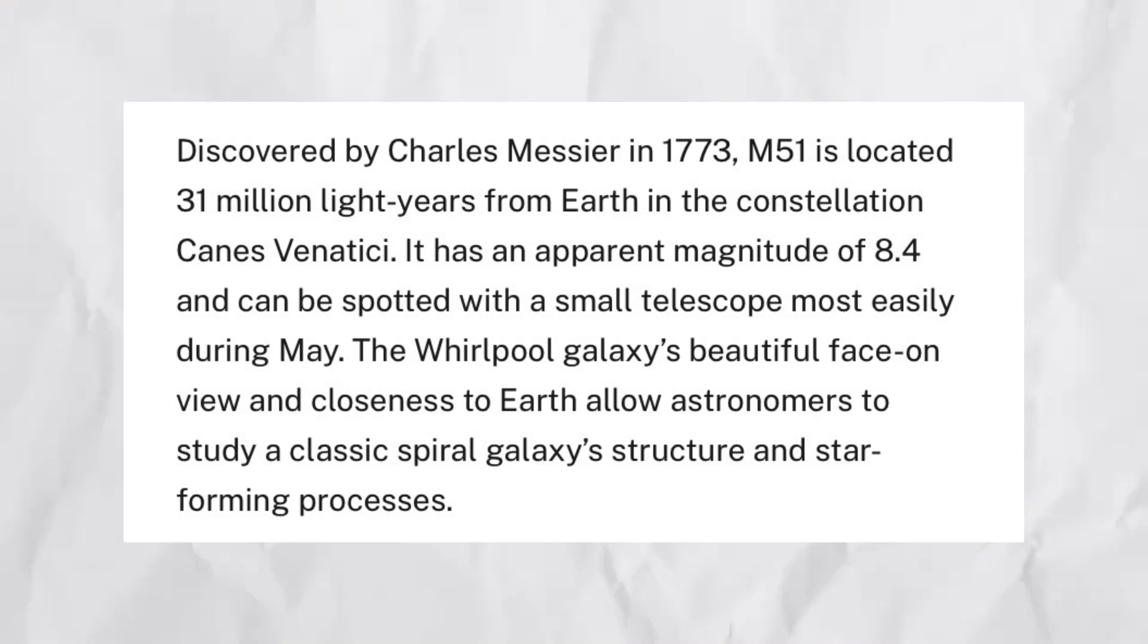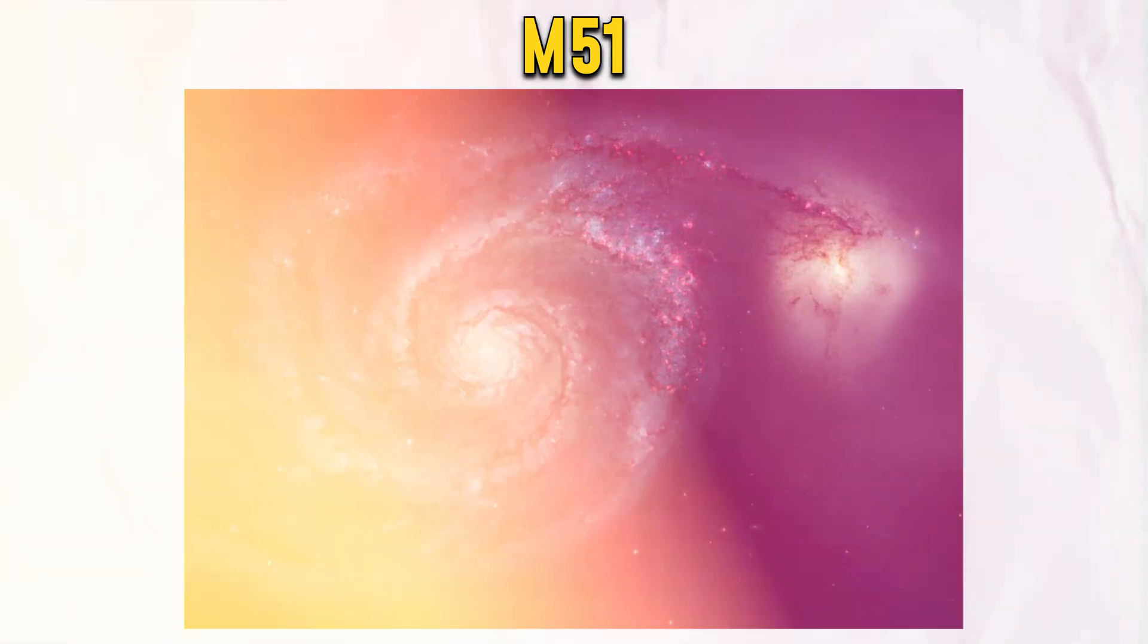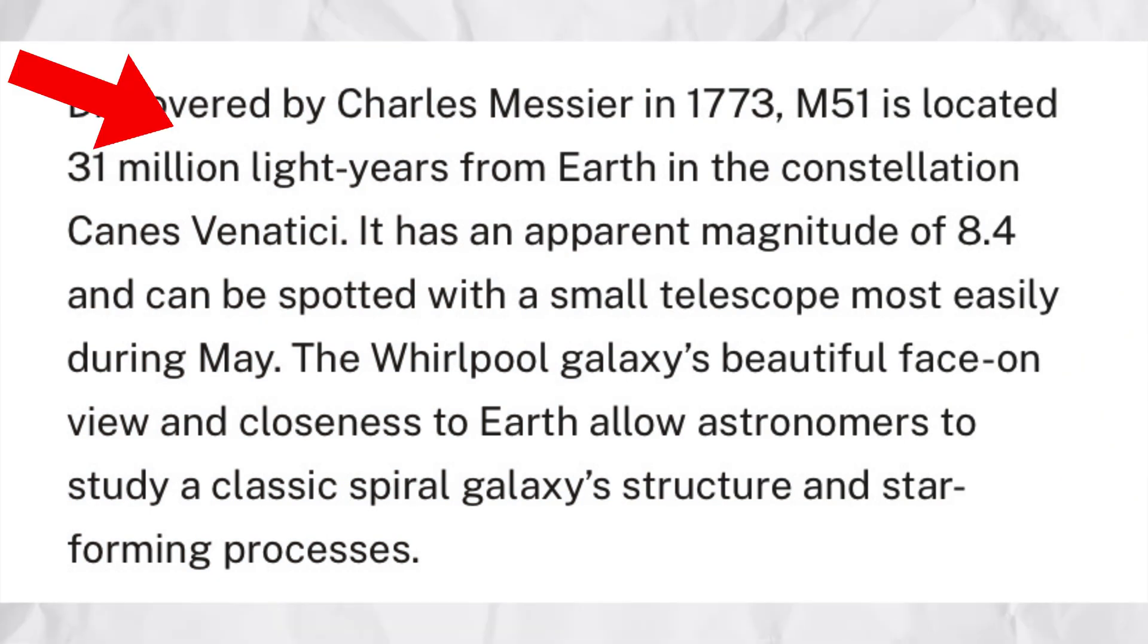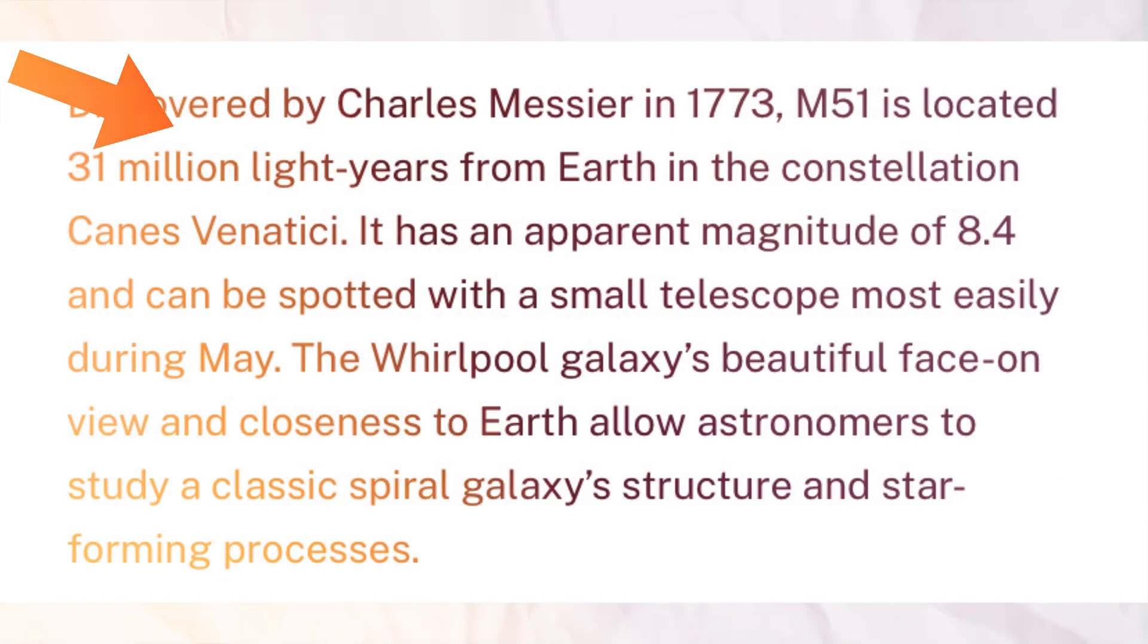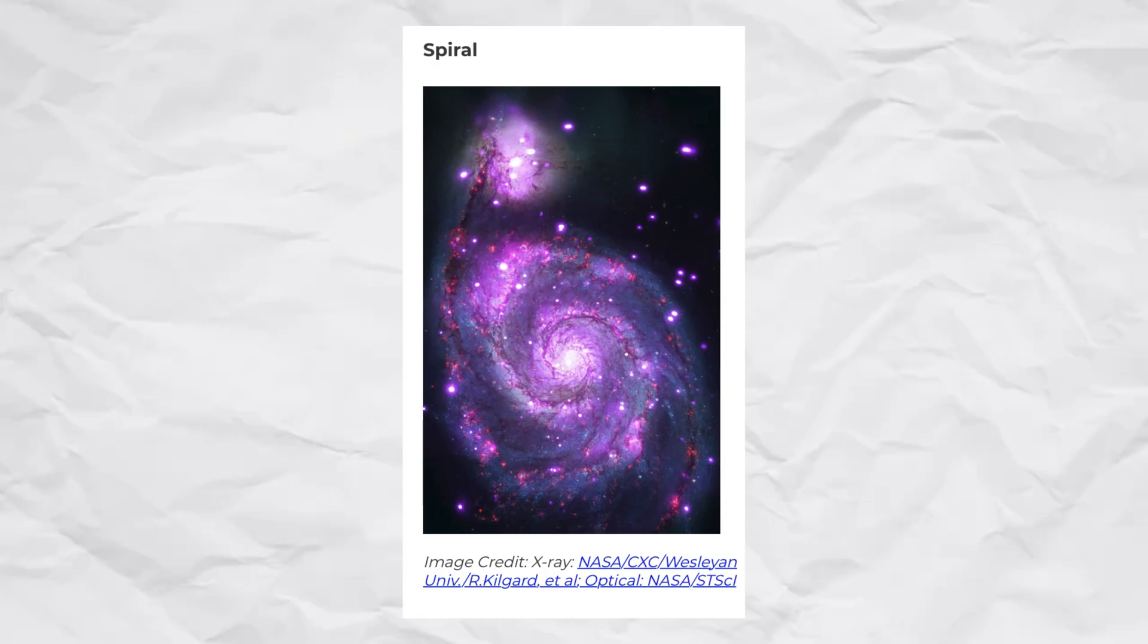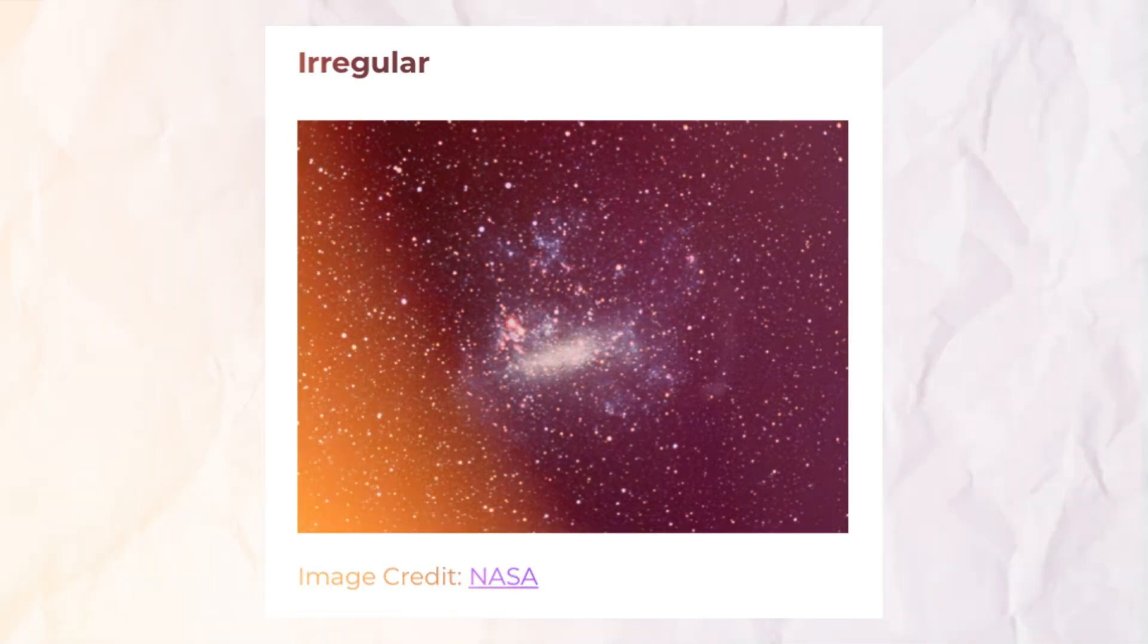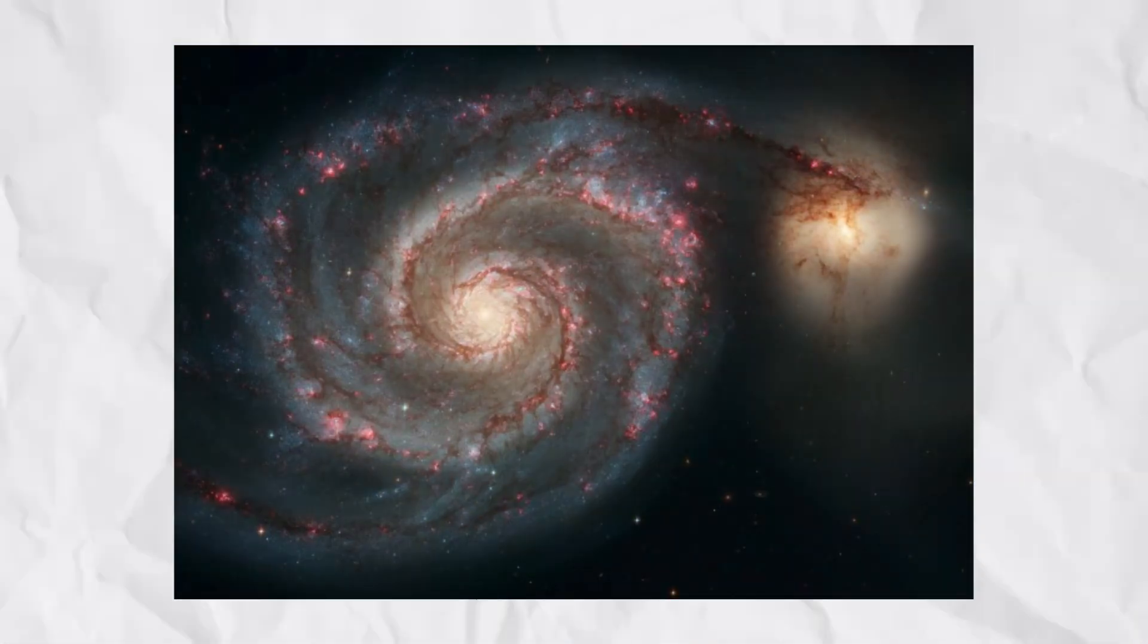The Whirlpool Galaxy was discovered by scientist Charles Messier. This galaxy is designated M51. The galaxy is 31 million light-years away. Galaxy shapes include spiral, peculiar, elliptical, and irregular. The M51 is a spiral galaxy.